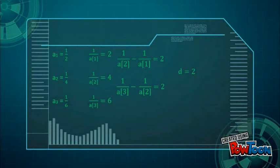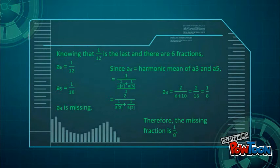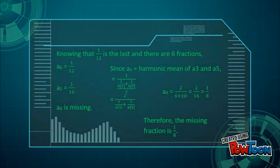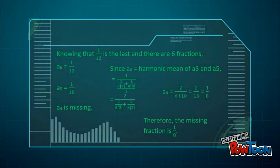Finding the differences, the common difference is 2. Since a₄ is missing and knowing that 1/6 is the last with 6 fractions total, a₄ is the harmonic mean of a₃ and a₅. Since a₄ = harmonic mean of a₃ and a₅, solving gives a₄ = 1/8. Therefore, the missing fraction is 1/8.